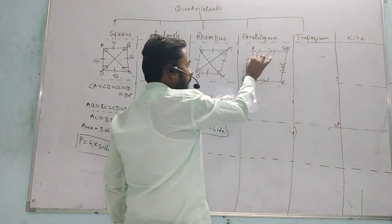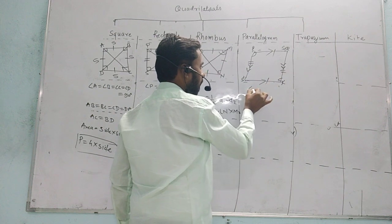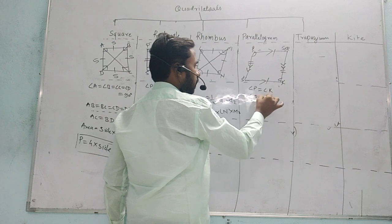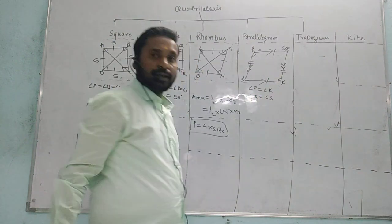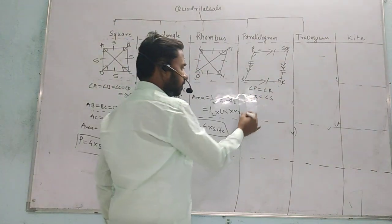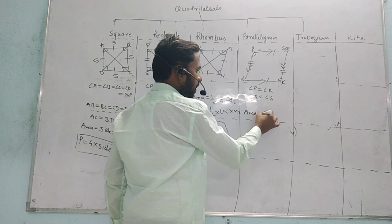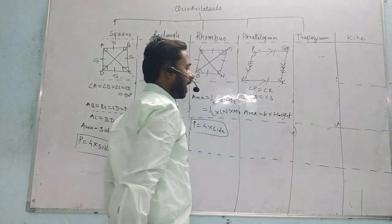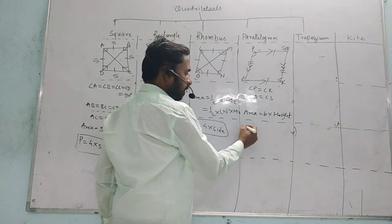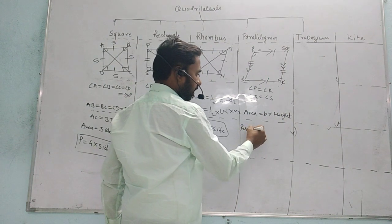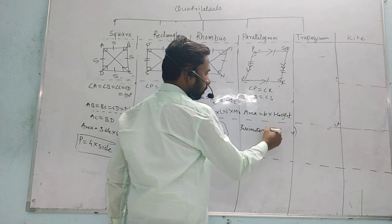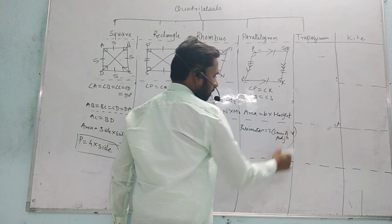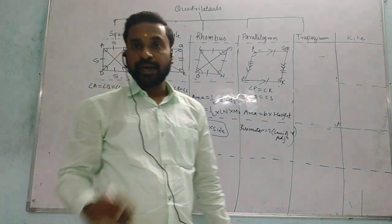Opposite angles are also equal — angle P is equal to angle R, and angle Q is equal to angle S. Area of a parallelogram is base multiplied by height. And its perimeter is 2 into the sum of adjacent sides.